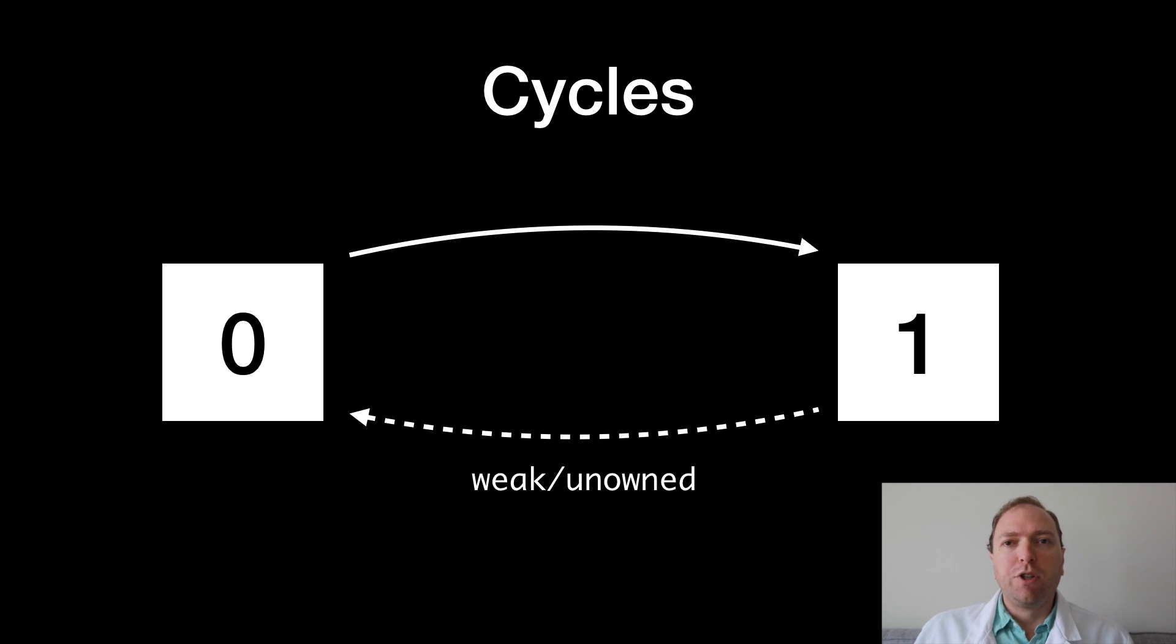This requires putting in some notion of directionality into your object graph. So you have a hierarchy of parents to children. And the parents strongly reference their children and the children weakly reference their parents. This is why many delegates in the framework are declared weak and why it's so common to capture self as weak when you write closures.